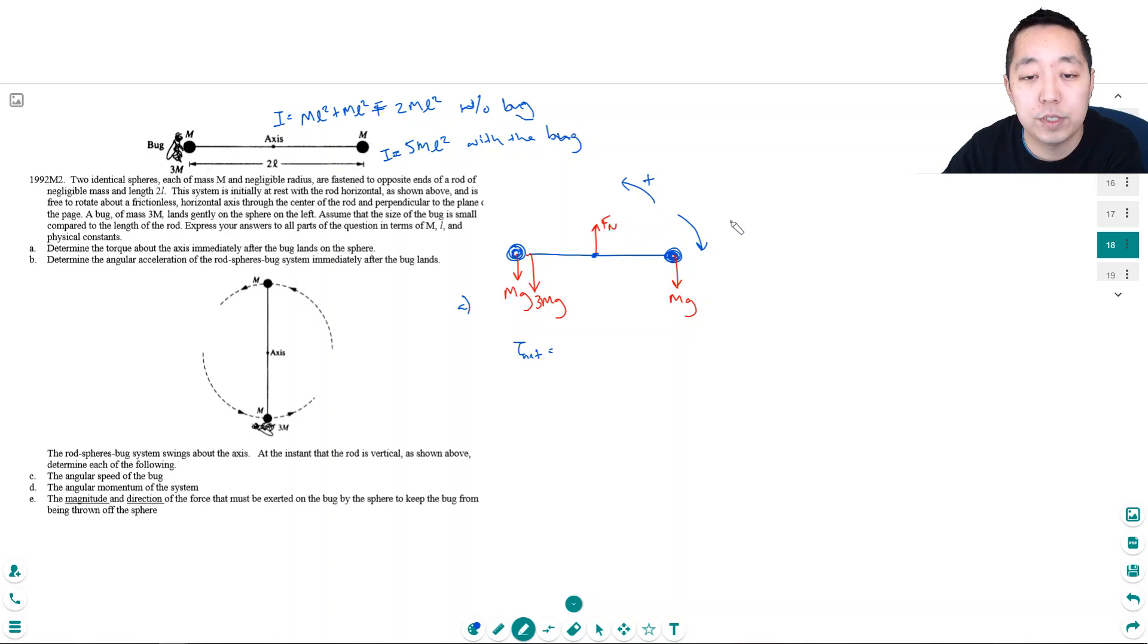I'm going to say positive is counterclockwise. If a torque causes it to rotate this way, I'm going to say it's a positive torque. If it causes it to rotate this way, I'm going to say it's a negative torque.